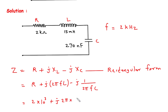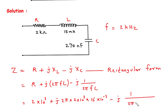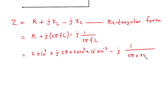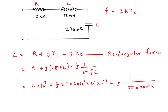The value of frequency is 2 kHz, so it is 2×10³. The inductance L is 15 milli henry, so it is 15×10⁻³. Minus j times 1 upon 2πF, where F is 2×10³, multiplied by C. The capacitance C is 270 nano farad, so it is 270×10⁻⁹.